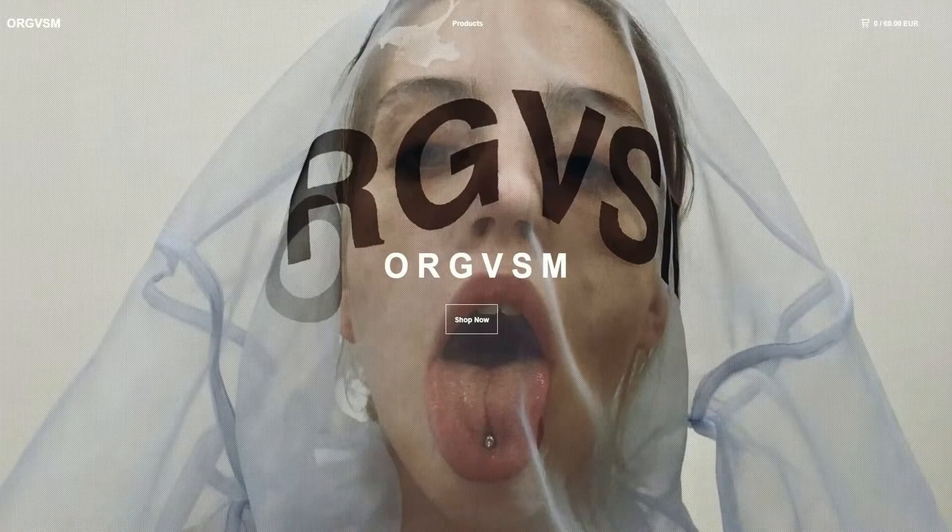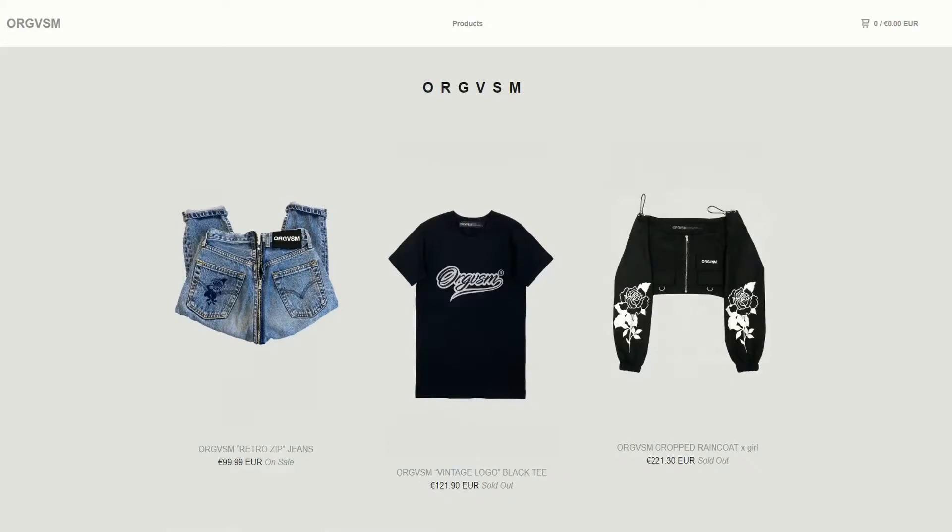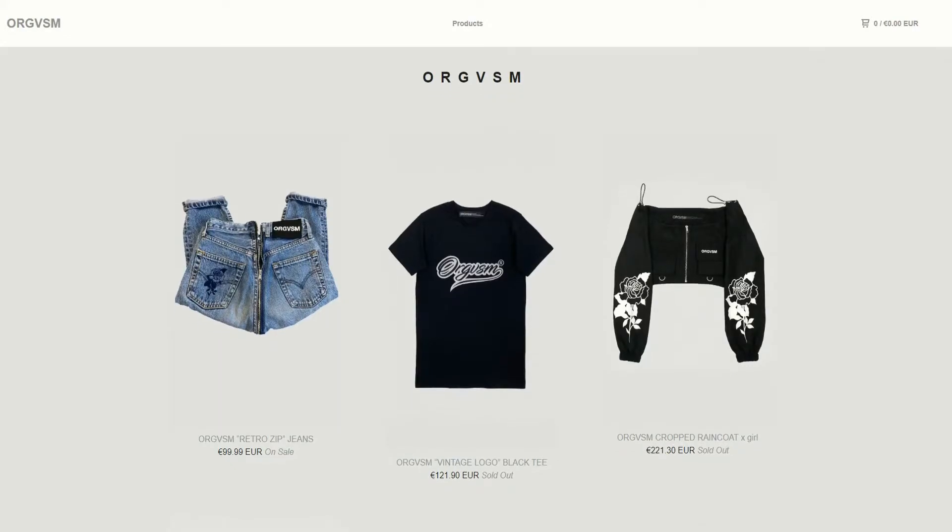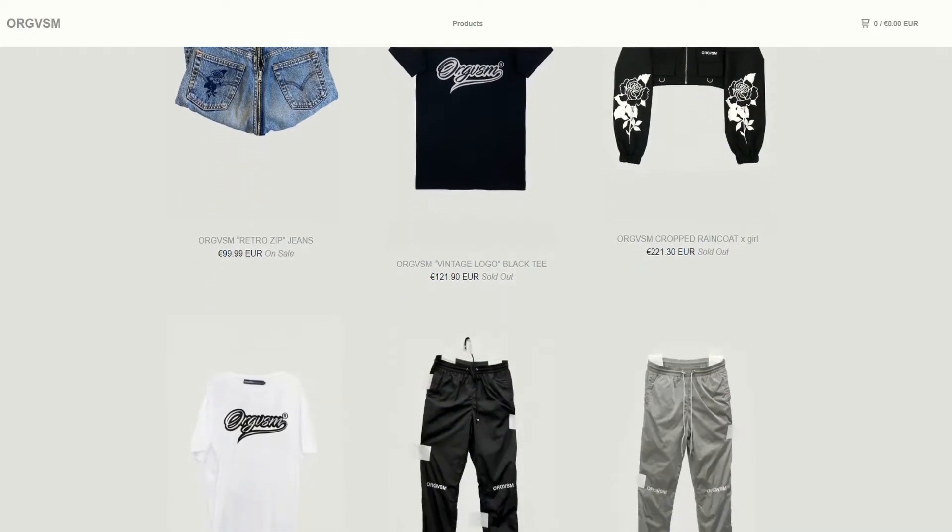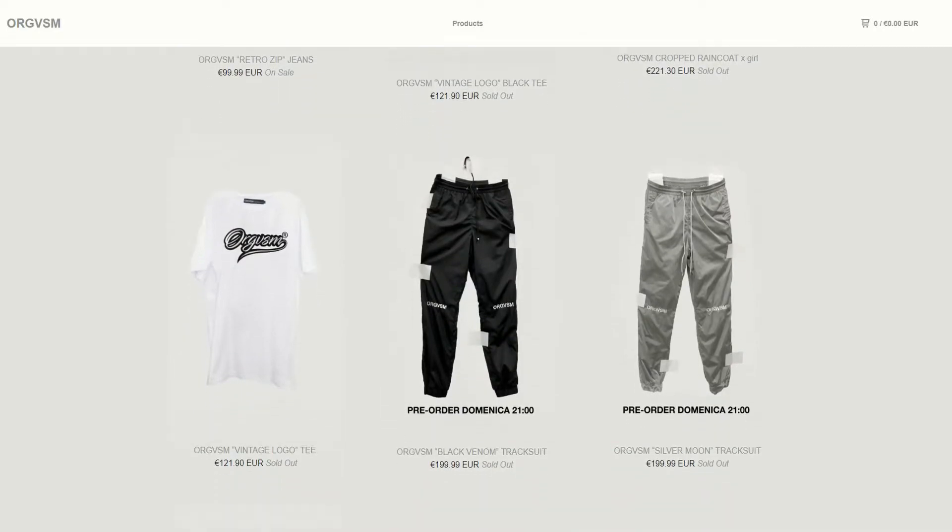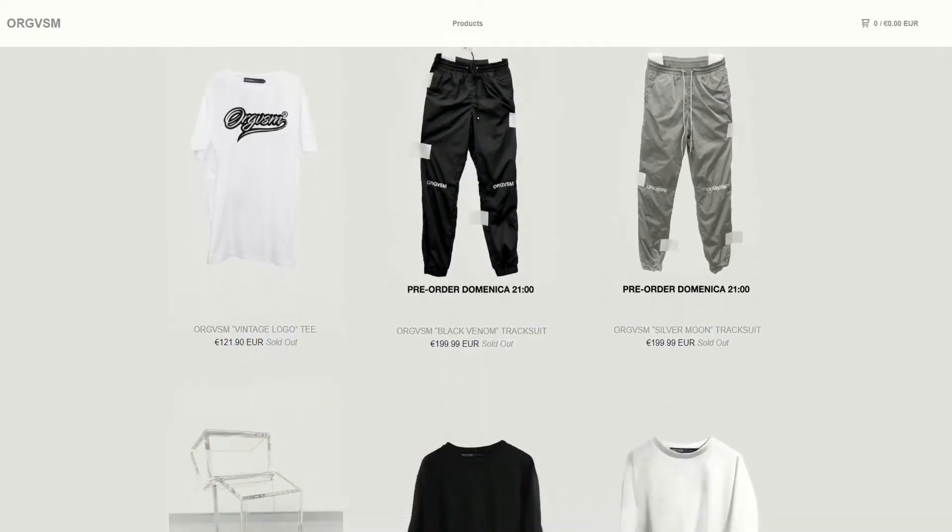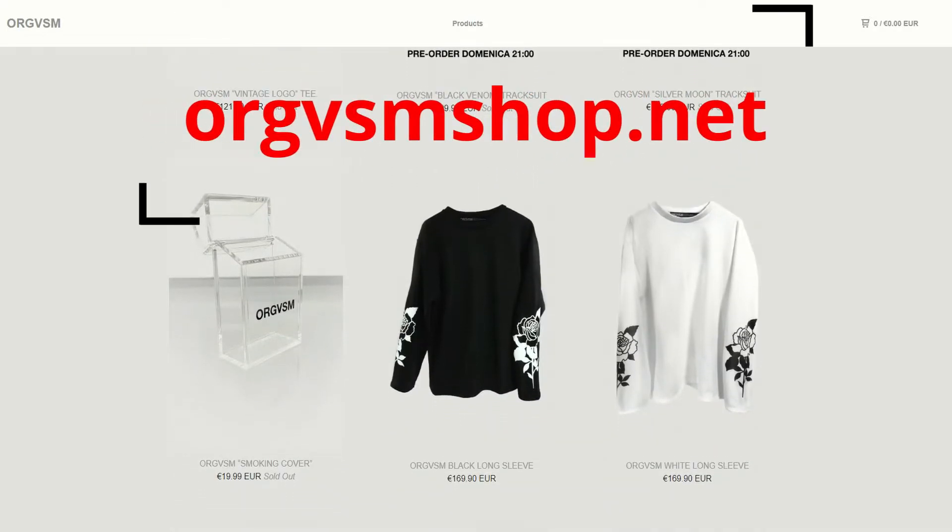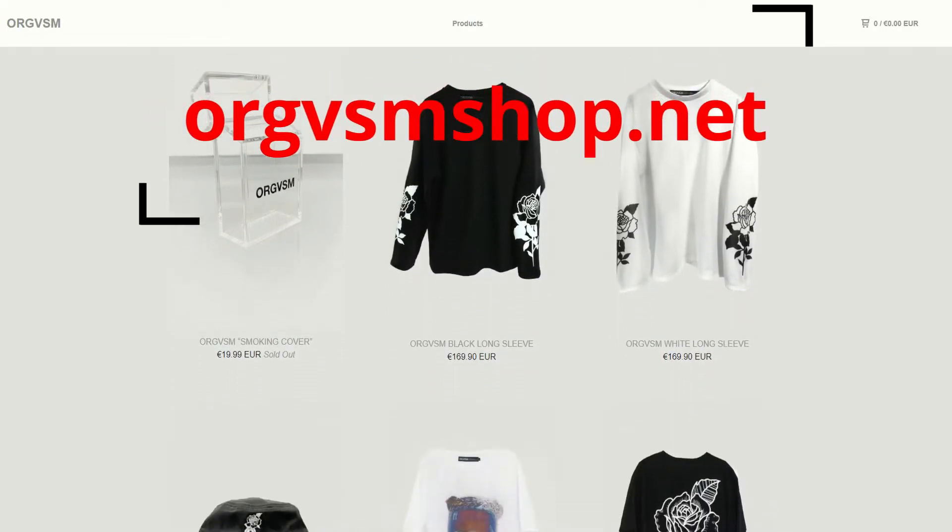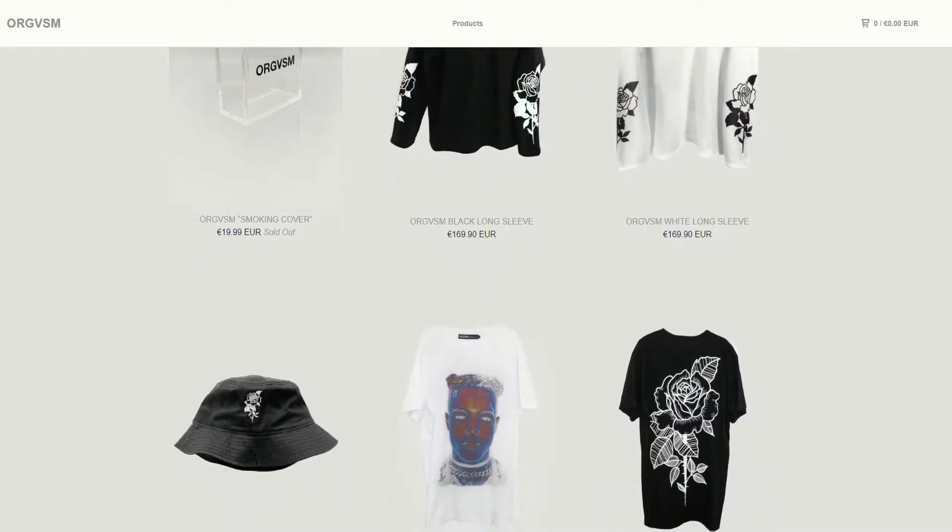Today's video is brought to you by ORGVSM, an online store where you can find shirts, jeans, and cool accessories that fit your needs. All the products are made in Italy and can be shipped worldwide, so don't waste your time, start looking fancy today with their style. For more information, go to orgvsmshop.net or check it out at the link in the video description.